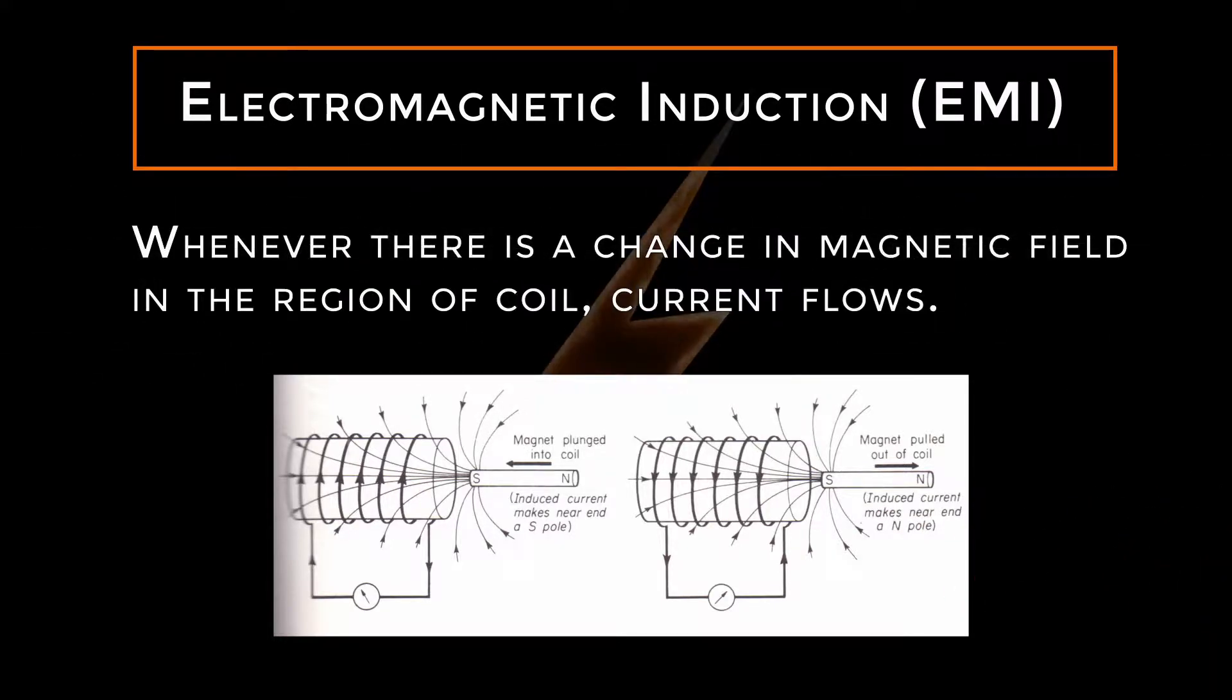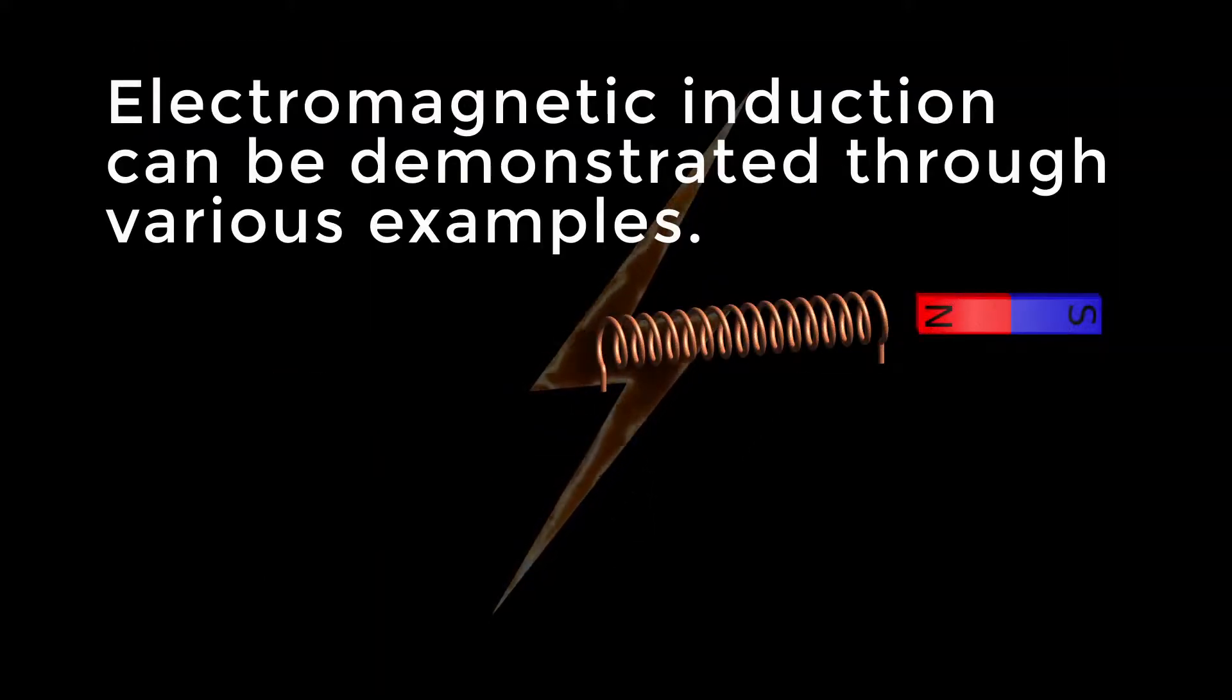Whenever there is a change in magnetic field in the region of a coil, current flows. Electromagnetic induction can be demonstrated through various examples.